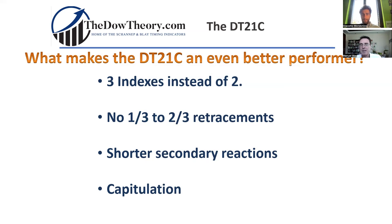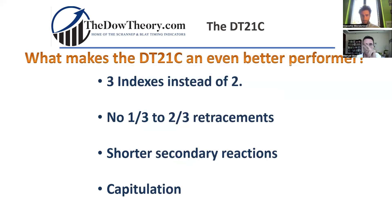First, the DAO theory for the 21st century uses three indexes instead of two. The original DAO theory is based, for instance, on the DAO Industrials and the DAO Transportation. Jack Shane included a third index, the S&P 500.